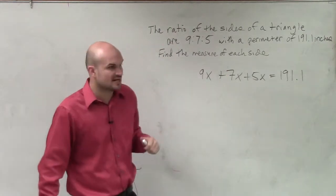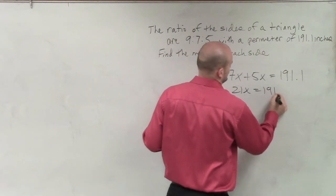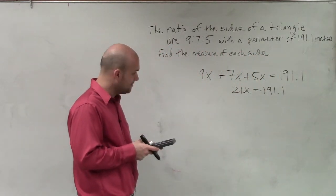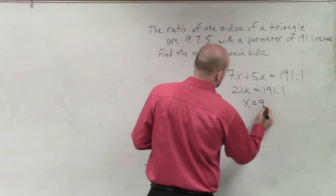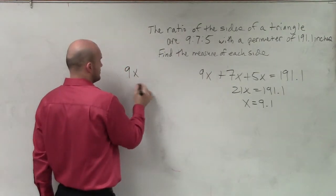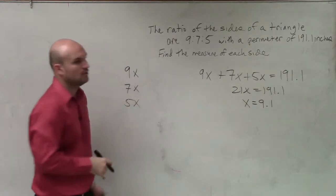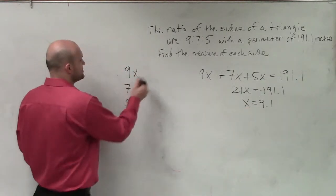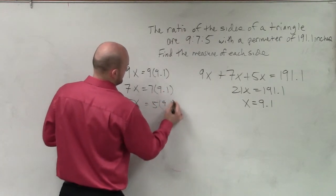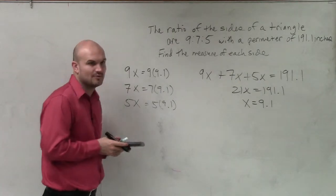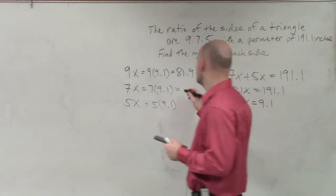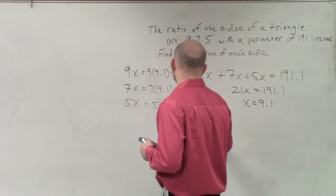So I can simplify this: I have 21x equals 191.1. Using a calculator, 191.1 divided by 21 equals 9.1, so x equals 9.1. The ratio is 9, 7, 5 — but what are the actual real lengths? My reduction factor is 9.1, so I multiply each ratio value by that: 9 times 9.1 equals 81.9, 7 times 9.1 equals 63.7, and 5 times 9.1 equals 45.5.